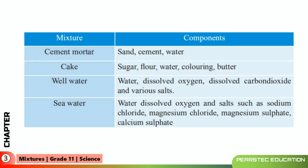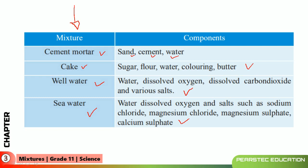Good examples include cement mortar, which consists of sand, cement, and water. A cake consists of sugar, flour, water, coloring, and butter. Well water contains water, dissolved oxygen, dissolved carbon dioxide, and various salts. Seawater has more components: water, dissolved oxygen, and salts such as sodium chloride, magnesium chloride, magnesium sulfate, and calcium sulfate. Two or more components come together to form a mixture, but they are not chemically combined and can be separated by physical methods.